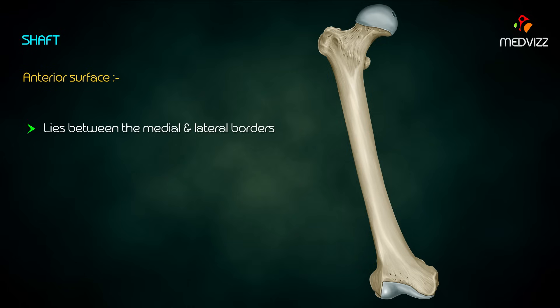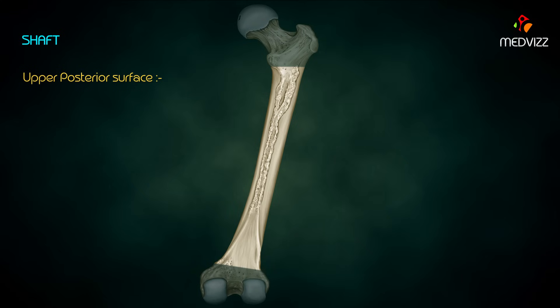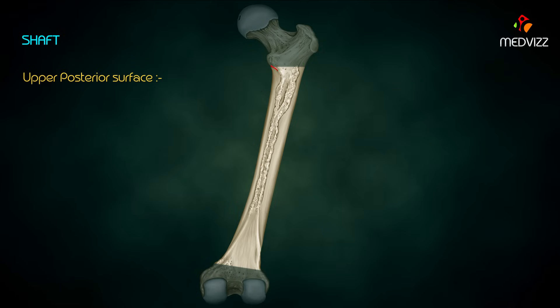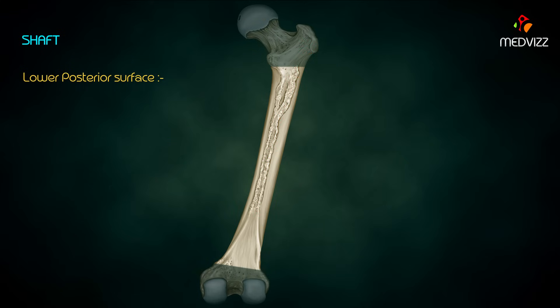The anterior surface lies between the medial and lateral borders. The lateral surface lies between the lateral and posterior borders. The medial surface lies between the medial and posterior borders. The upper posterior surface lies between the spiral line and the gluteal tuberosity. The spiral line extends from the lower end of the intertrochanteric line to the medial lip of the linea aspera. The gluteal tuberosity is a broad ridge continuous below with the lateral lip of the linea aspera.